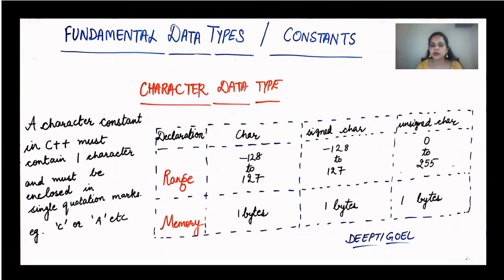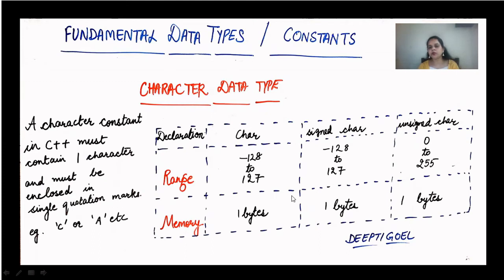The next data type is the character data type. Characters can be any alphabets or symbols. The range of signed characters is from minus 128 to 127. For unsigned characters, it cannot take negative values — so the range is 0 to 255. The memory location for character, signed character, and unsigned character is all 1 byte. A character constant in C++ must contain only one character and must be enclosed in single quotation marks.